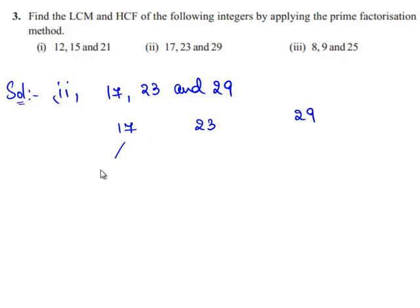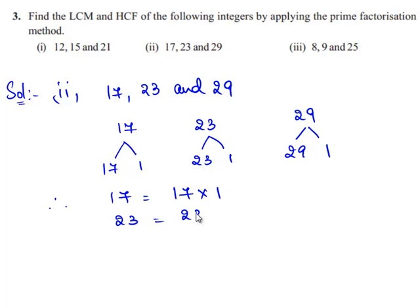Therefore 17 can be written as 17 times 1, 23 can be written as 23 times 1, and 29 can be written as 29 times 1.